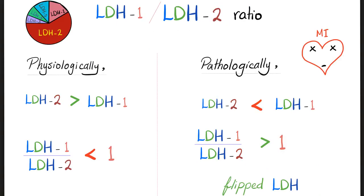The LDH1 to LDH2 ratio is one of the most important ratios in medicine. Normally, LDH2 should be greater than LDH1 — about 35% of total LDH is LDH2. So the LDH1/LDH2 ratio is normally less than 1. But in myocardial infarction, LDH1 elevates and exceeds LDH2, making the ratio greater than 1. In other words, the LDH has flipped — LDH1 is now greater than LDH2.